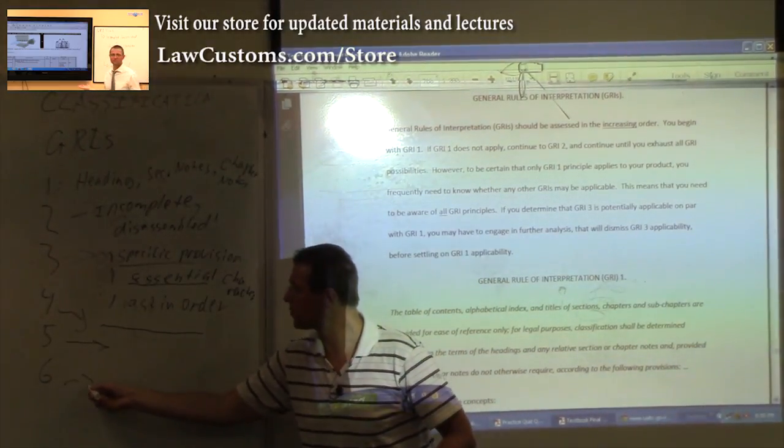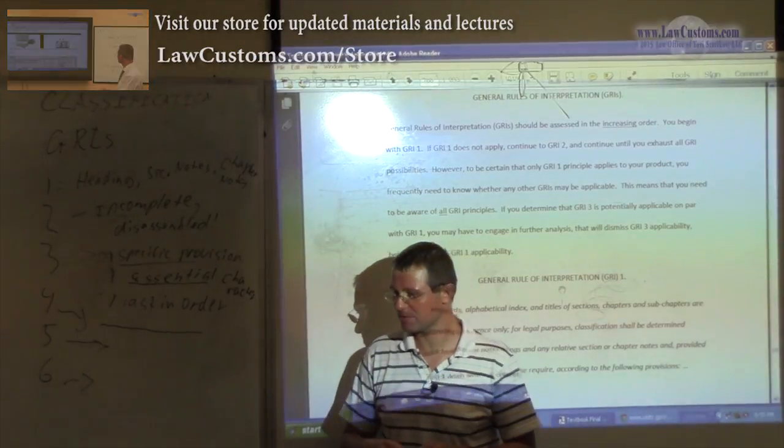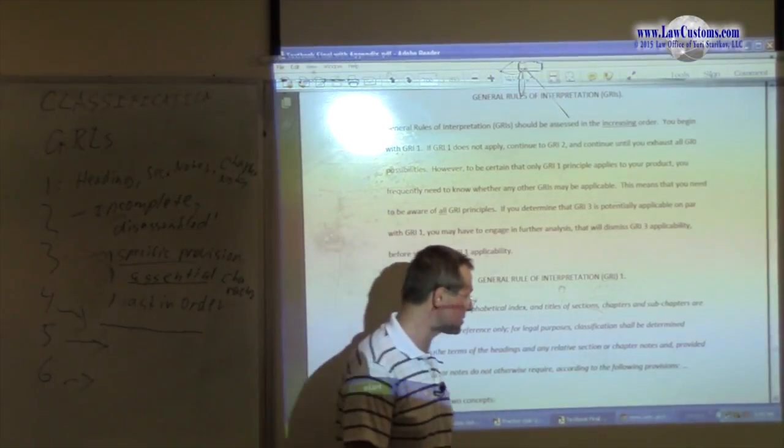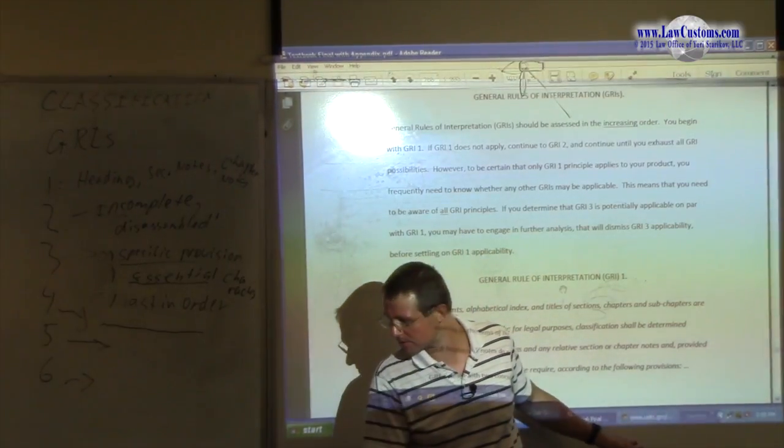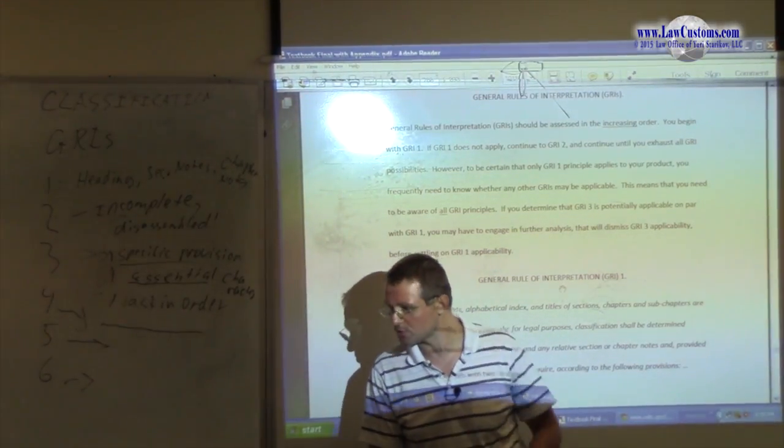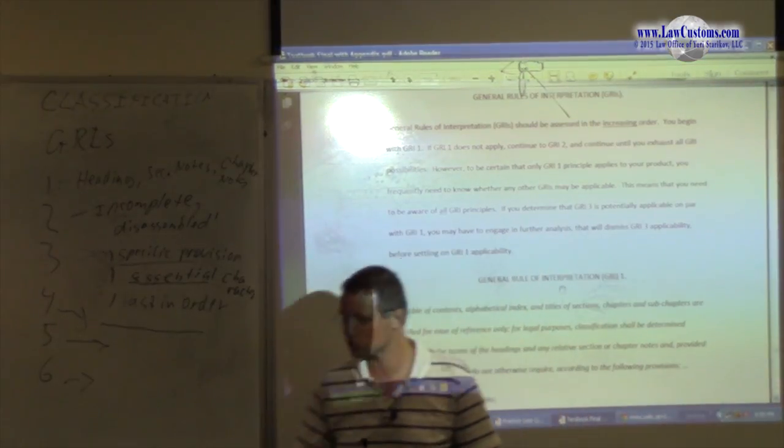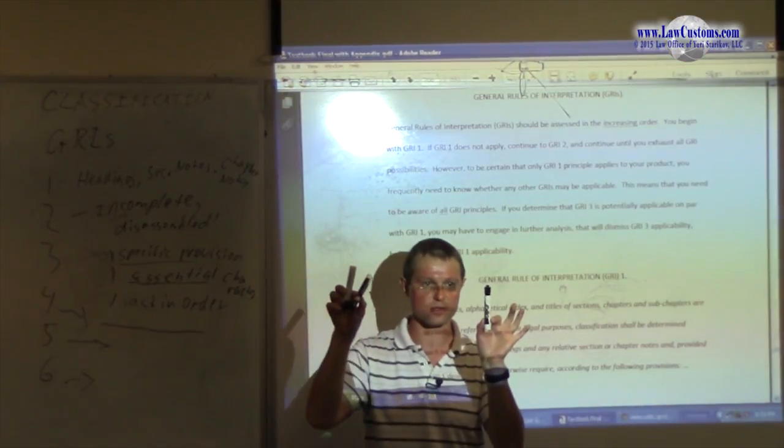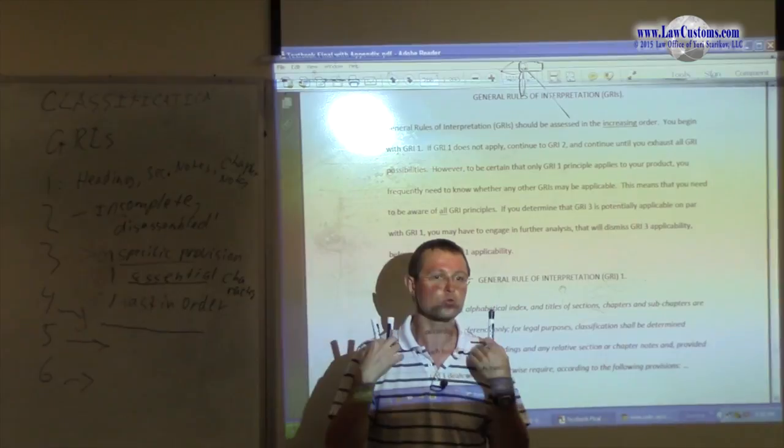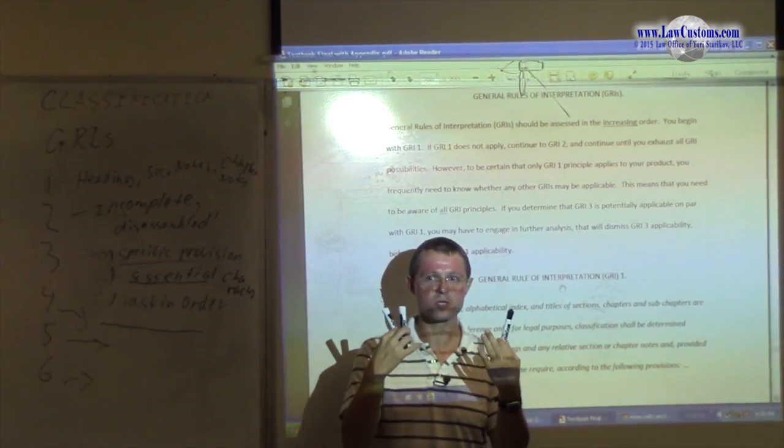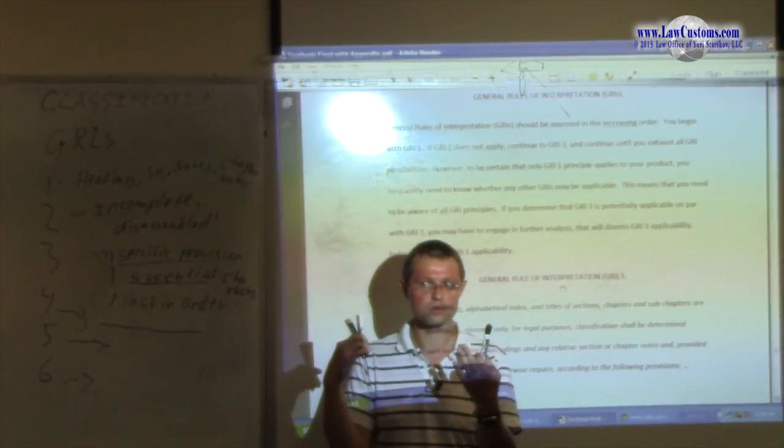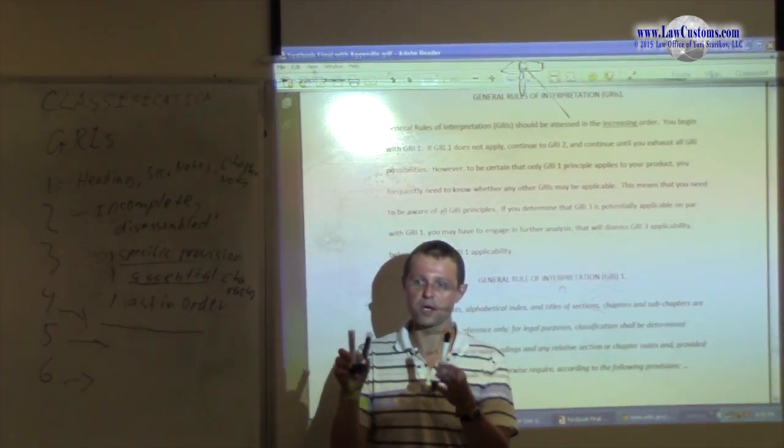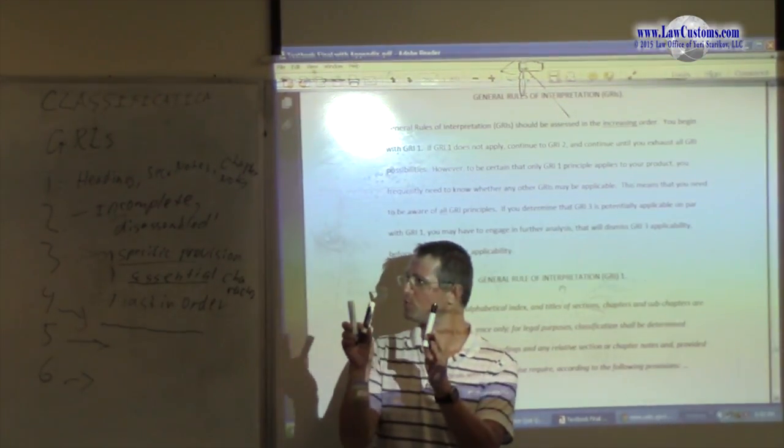GRI 5 provides for containers. I have a container which is packed—I don't know, plastic container which packs those three markers. I have all those markers. Again, the question is: do I need to classify this container separately or not? What do you think? Plastic container with those markers.